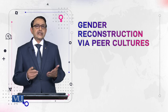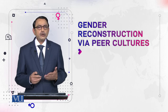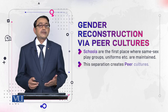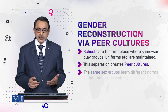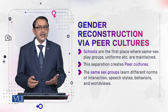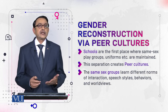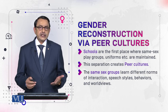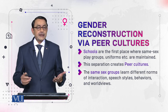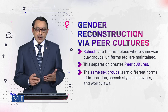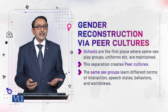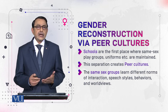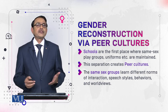Now, how are peer cultures developed and how do they reconstruct our gender? Schools are the first place where same-sex play groups, uniforms, and similar practices are maintained. This separation creates peer culture — same-sex groups where members learn different norms of interaction.